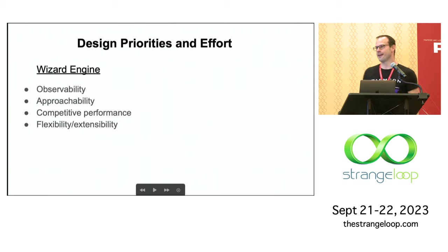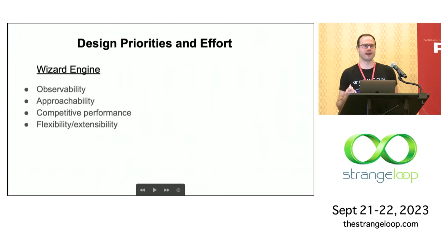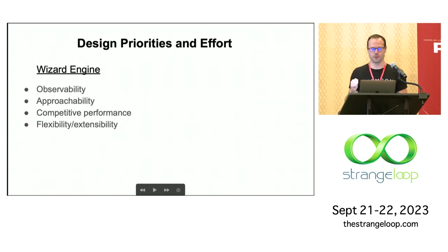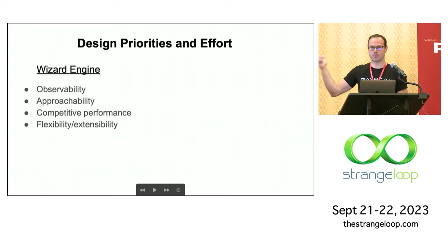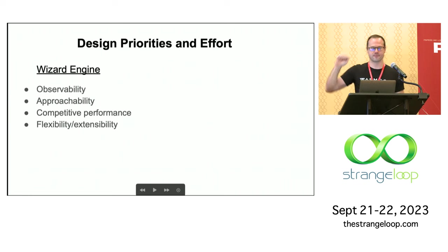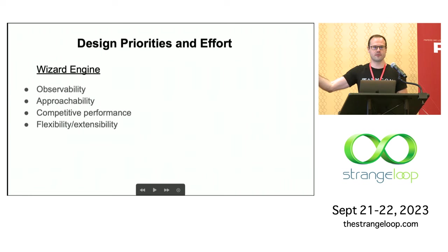So what are the priorities? You actually have to write these down. If you're starting a software system and you don't know what the requirements are and you don't know what the priorities are, you probably end up with something that doesn't meet the needs of what you started out with. These are the priorities I came up with, in order. Number one at the top: observability.